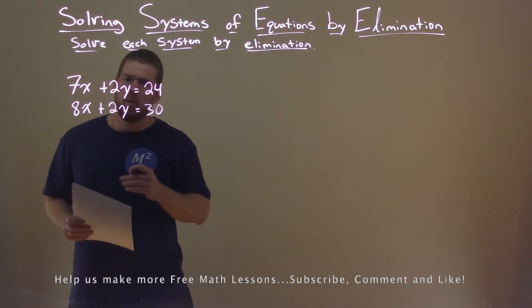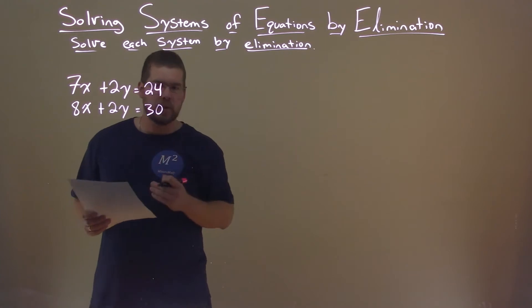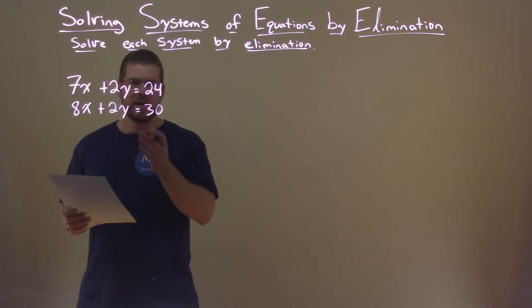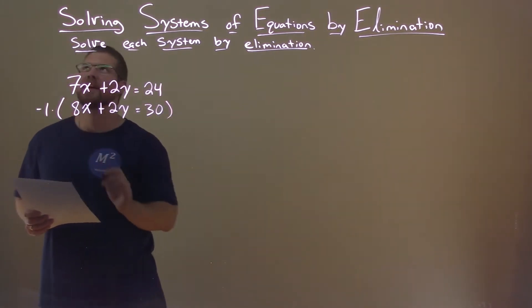With elimination, I try to eliminate one variable by adding the two equations. The closest thing I can see is 2y, but I can't just add the two together. I'm going to take the second equation and multiply it by negative 1.